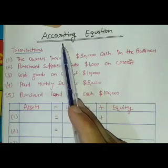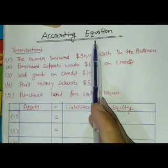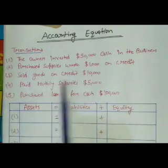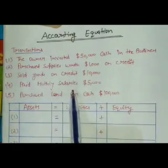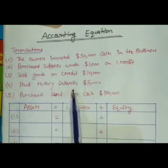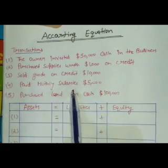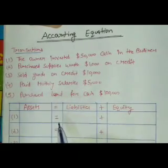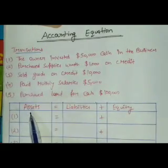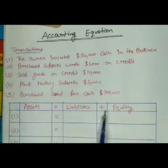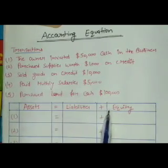In this video we are going to learn the foundation of the double entry accounting system, that is the accounting equation. I will analyze each transaction one by one and show their effect on assets, liabilities, and equity. The basic accounting equation is: Assets = Liabilities + Equity.